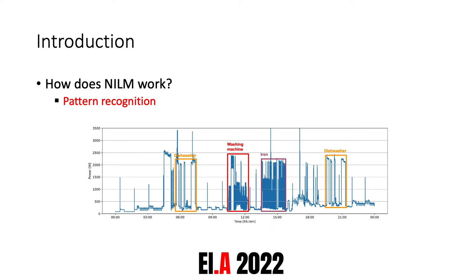How does NILM work? In general, NILM uses pattern recognition algorithms to find the power signatures of the devices in the total load of the house. In this example, we can see that a dishwasher, a washing machine, and an iron can have very different power signatures, characterized by distinctive features that allow us to distinguish between them.